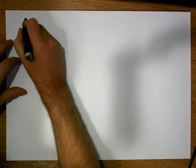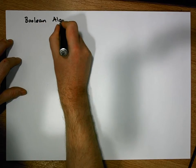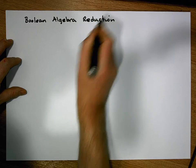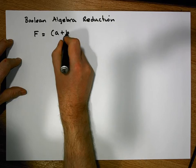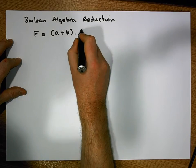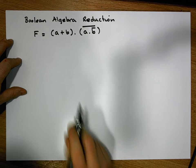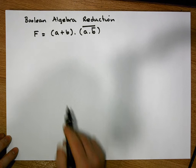Hi guys, this is Jonathan Lambert with the Mathematics Development and Support Service at National College of Ireland. This short video is going to consider another example of a Boolean algebra or Boolean function reduction. The function we're going to consider is f = (A OR B) AND (A AND ĀB), all negated.